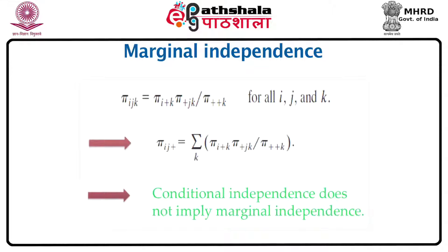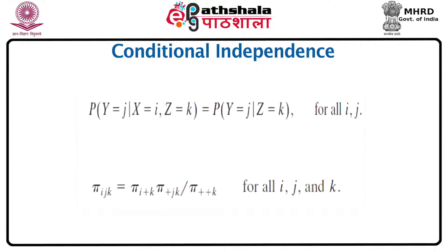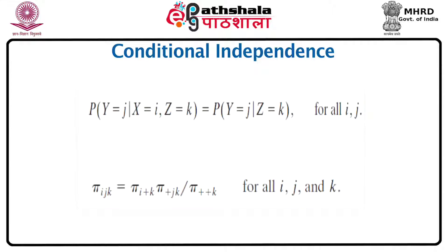Note that if we have conditional independence, the condition holds for all i, j, k, and if we sum this equation over k it leads to an expression pi_ij+ = sum over k of (pi_i+k * pi_+jk / pi_++k), which does not look the same as marginal independence. Hence we come to the conclusion that conditional independence need not imply marginal independence, and vice versa.